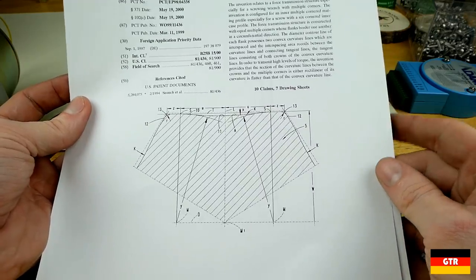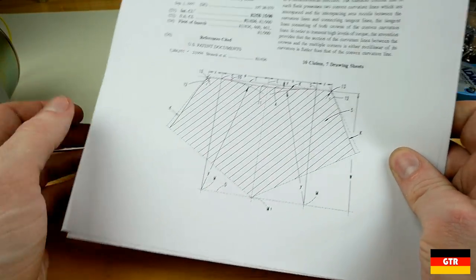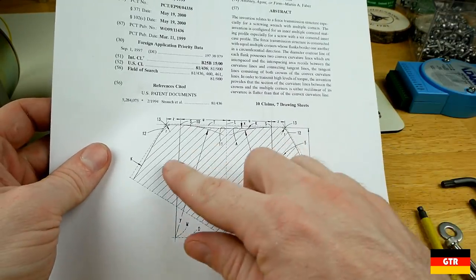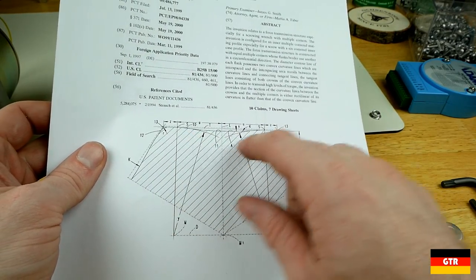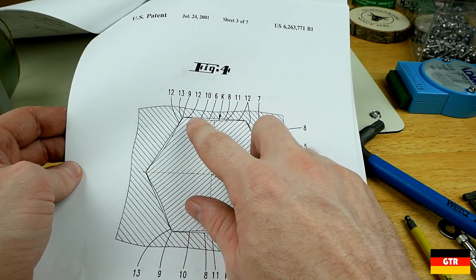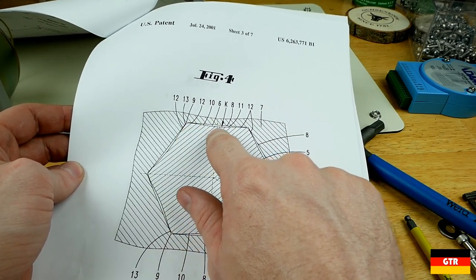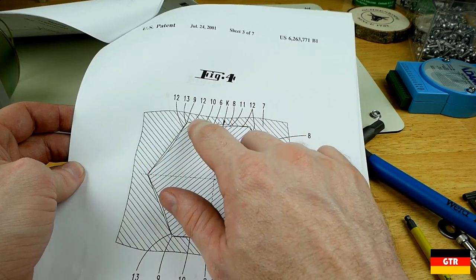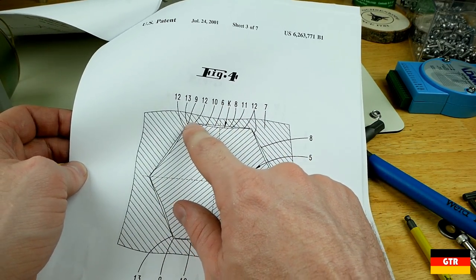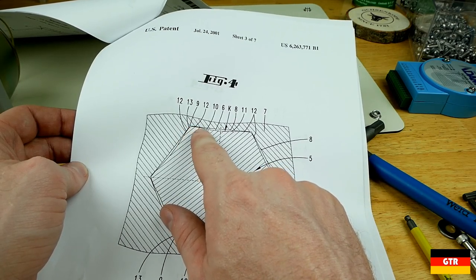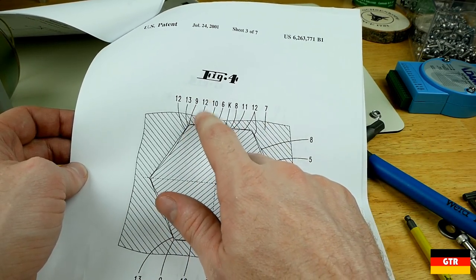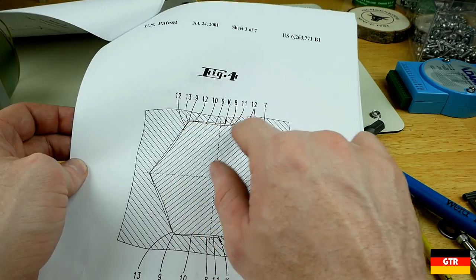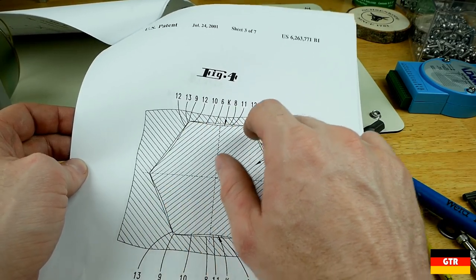So for those that are interested in the technical details of why this system is better than all the rest, this is just one of the patents that they released on this hex plus system. And they actually give all the dimensions of the profile. So essentially the way this is working is on a normal L key, you're going to have just a point here that's going to be making contact with the sidewall of the socket cap. What they actually did was they made this curvature so that you actually are getting more surface area touching that inner surface. And that's basically how they're able to get more force out of it. And they basically do it on both sides depending if you're tightening or loosening the fastener.